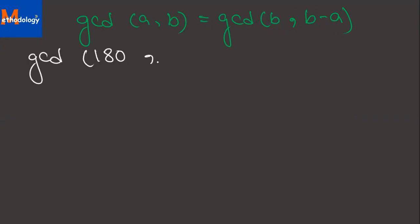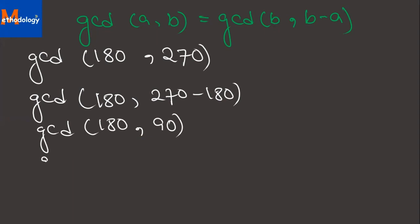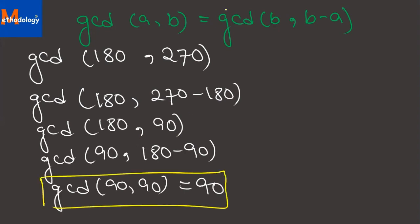Also, gcd(a,b) = gcd(b, b-a). For example, gcd(180, 270) equals gcd(180, 270-180) which is gcd(180, 90). Then gcd(180, 90) equals gcd(90, 180-90) which is gcd(90, 90), and the GCD is 90. This is a very important algorithm for finding GCD of large numbers.